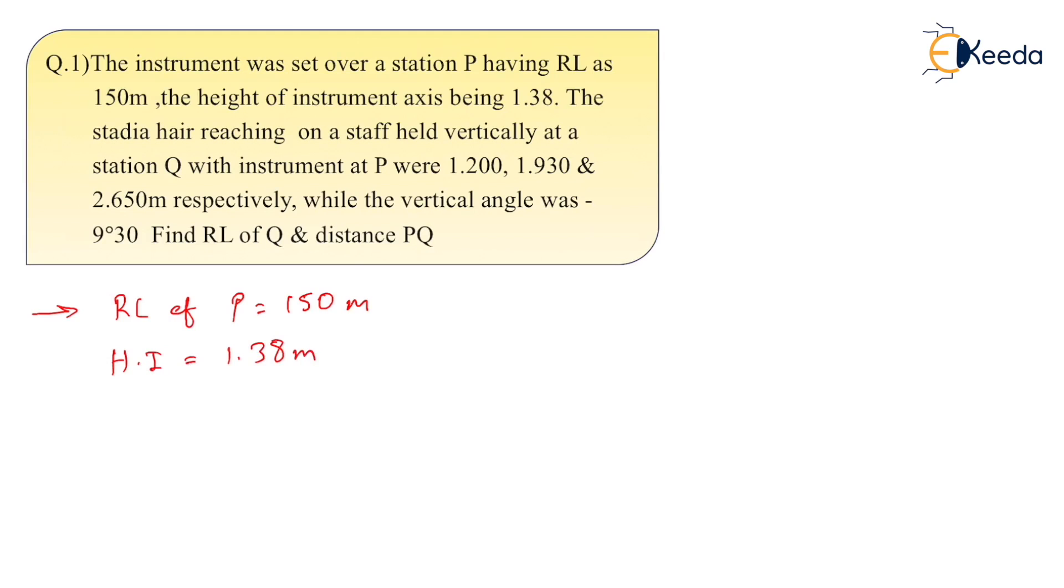Stadia is reaching a staff held vertically at Q with instrument at P, where we have upper, middle, and lower readings. By using these readings we can find out staff intercept, S, which is upper reading minus lower reading. So we can get the staff intercept as 1.45m.